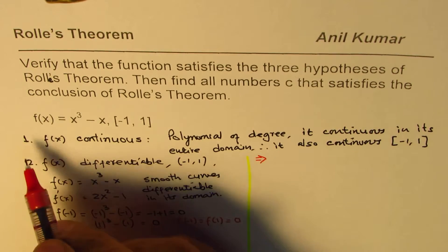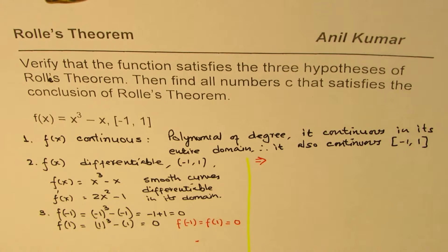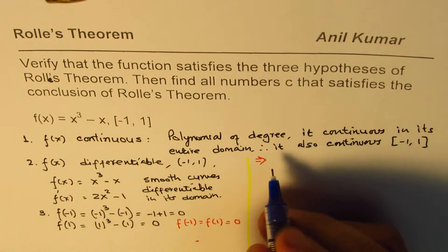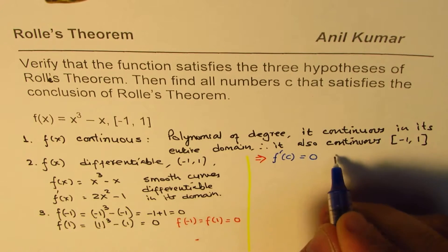So what is the conclusion? When we have all these three conditions met, in that case we say that there is a point c so that f'(c) = 0. So that is the conclusion.